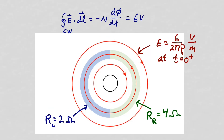At t equals zero plus, just after the current is ramped, the electric field will be circles surrounding the solenoid with a value of six over two pi rho volts per meter, where rho is the distance from the center of the solenoid. At t equals zero plus, the electric field intensity in the left half ring and the right half ring will be the same, but because of the different conductivities, the current flowing in the left half ring will be larger than the current flowing in the right half ring.